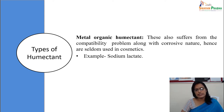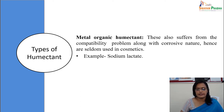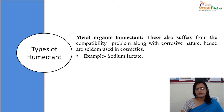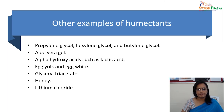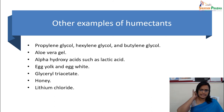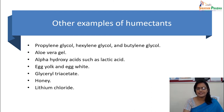In this module we also discussed anionic, cationic, non-ionic, and amphoteric surfactants. Please remember the examples of each category — this is very important, as questions may ask for examples individually. Other examples of humectants apart from glycerol and mannitol include propylene glycol, aloe vera gel, alpha hydroxy acids such as lactic acid, egg yolk and egg white, glyceryl triacetate, honey, and lithium chloride. Please do remember these examples.